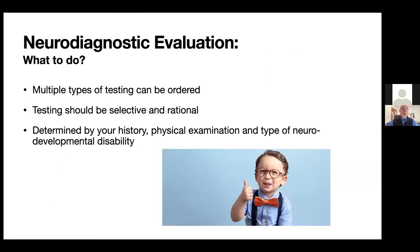So what to do? We can order lots of tests — imaging, genetic testing, EEGs — but we can't do everything for every patient; that would be wasteful and inappropriate. Testing should be selective and rational, performed based on what the child's exam and history tell you and how the testing may answer the questions we have.